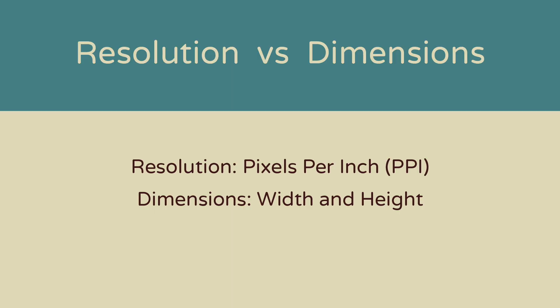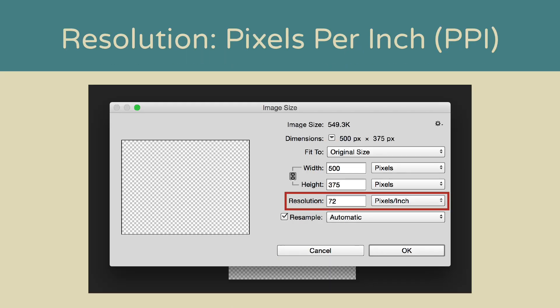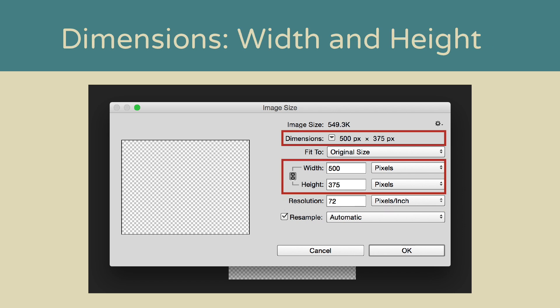The resolution of an image is talking about how many pixels per inch there are. The higher the resolution, the more pixels there are, which makes the image more detailed. The dimensions of an image are the height and width of that image. The dimensions are more about the shape of your surface — so whether you want it to be landscape, portrait, or a square.